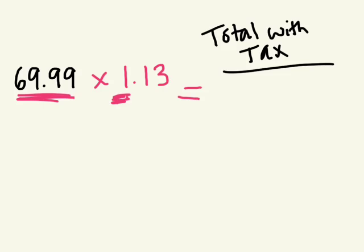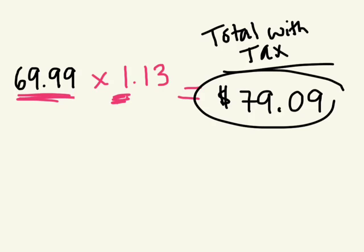So what's 69.99 times 1.13? We get the exact same answer, 79.09, all in one calculation because I put this 1.13 in front of it.